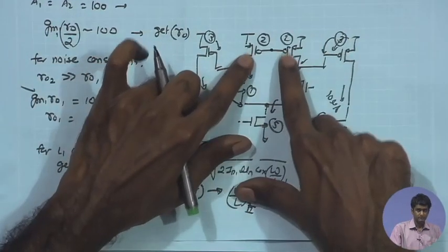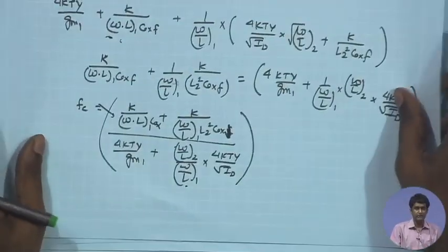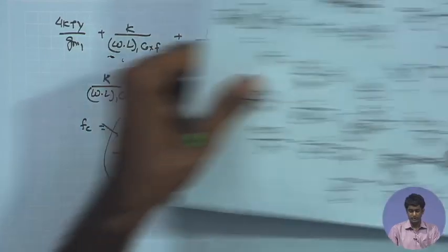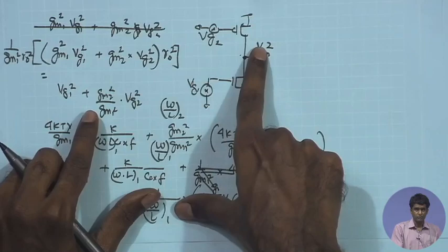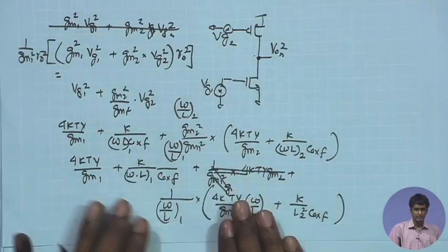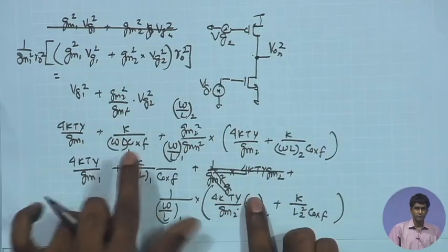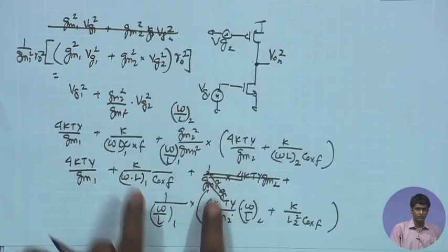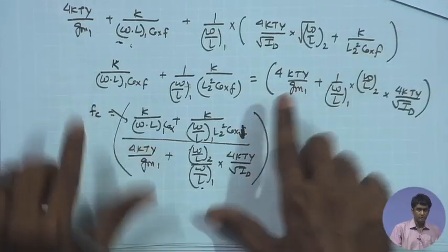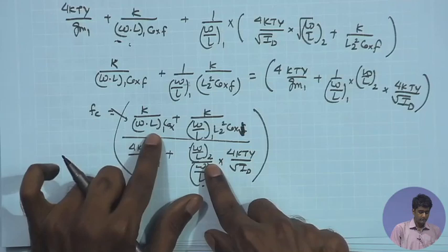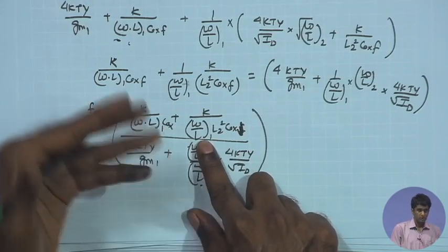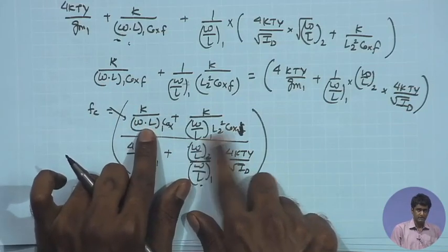Now I look at the load device sizing. I go back to the noise expression — specifically the 1/f noise corner. The input-referred noise is the total output noise divided by the gain from input to output. This equals [gm1·vg1 + gm2·vg2]²·ro² divided by gm1²·ro². To find the 1/f corner I equate the 1/f component to the thermal noise component. The corner frequency depends on W·L1 and W·L2, specifically L2 squared in the denominator.